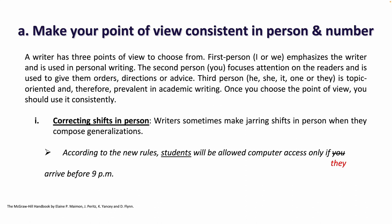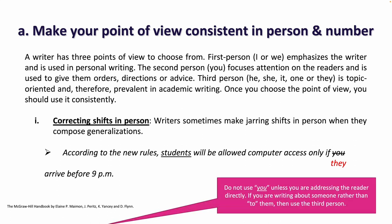Writers sometimes make varying shifts in person when they compose generalizations. One example is: 'According to the new rules, students will be allowed computer access only if you arrive before 9 p.m.' Do not use 'you' unless you are addressing the reader directly. If you're writing about someone rather than to them, use the third person. You would say: 'According to the new rules, students will be allowed computer access only if they arrive before 9 p.m.'